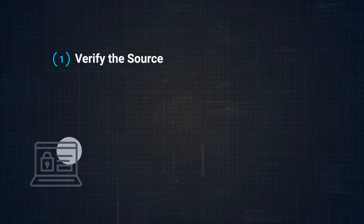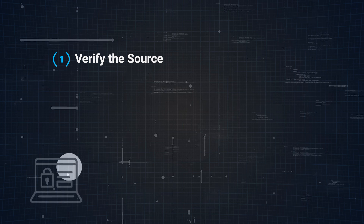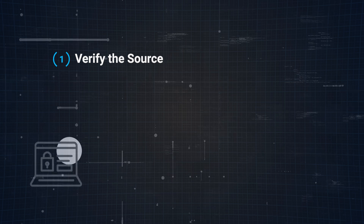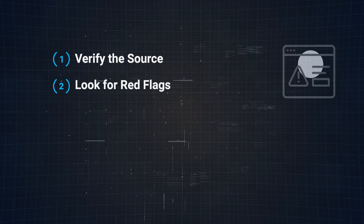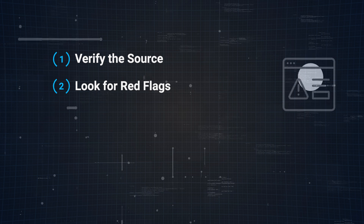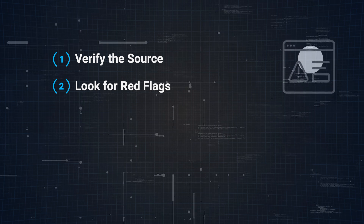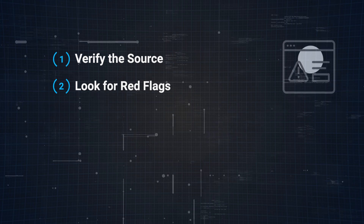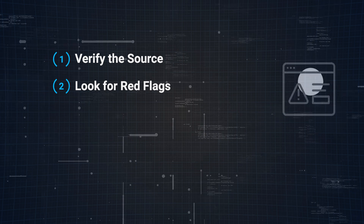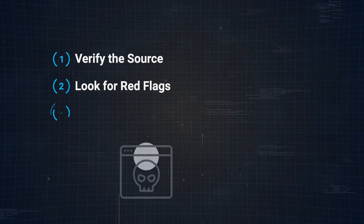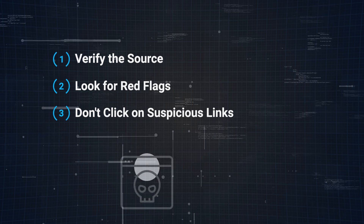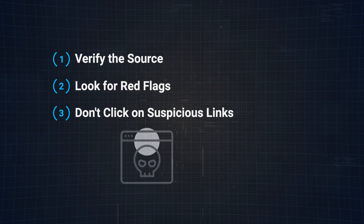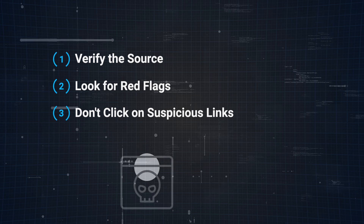Here are some ways you can protect yourself from phishing. Number one, verify the source — always check the sender's email address or phone number, and if it looks suspicious or unfamiliar, don't trust it. Number two, look for red flags — be cautious of emails or messages with urgent requests, spelling errors, or generic greetings like 'dear customer.' Legitimate organizations usually address you by name and have professional communication. Number three, don't click on suspicious links — hover over links to see the actual URL before clicking.